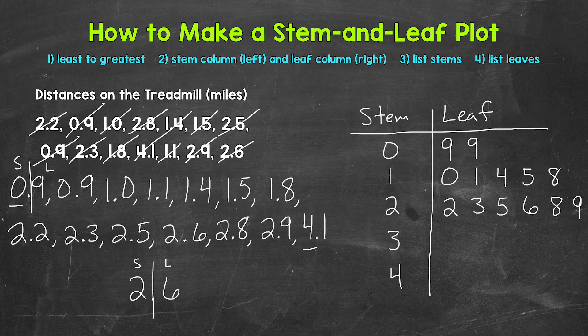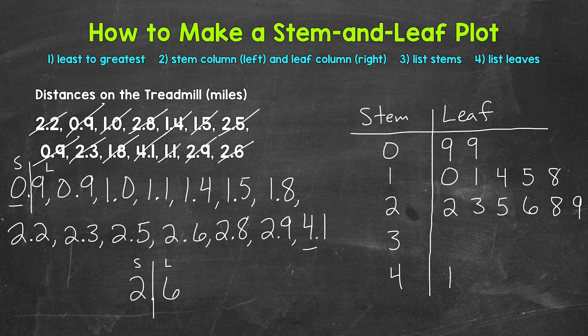Our last distance is 4.1. We skip the stem of three — we don't have any threes — so we move down to the stem of four and we need a leaf of one. And that's it for the leaves. We worked through the data and kept everything neat, spaced, and aligned so it's easy to read. You can see the distances under a mile, the one mile distances, the two mile distances, no three mile distances, and then a four mile distance.